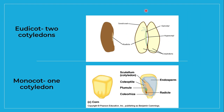Now let's compare the eudicot and the monocot. In a eudicot or dicot seed, there are two cotyledons. In a monocot, there is one cotyledon — because of the 'mono.' So that is what we discussed earlier, and that is the structure of the bean seed.